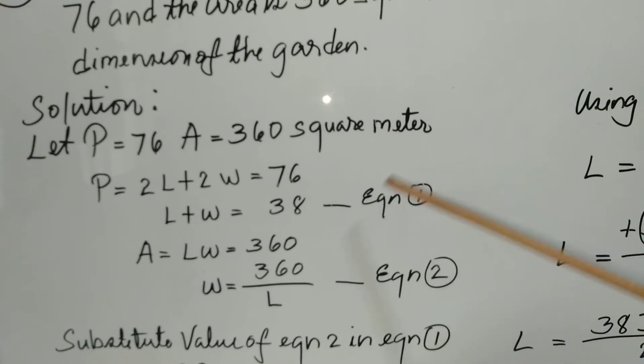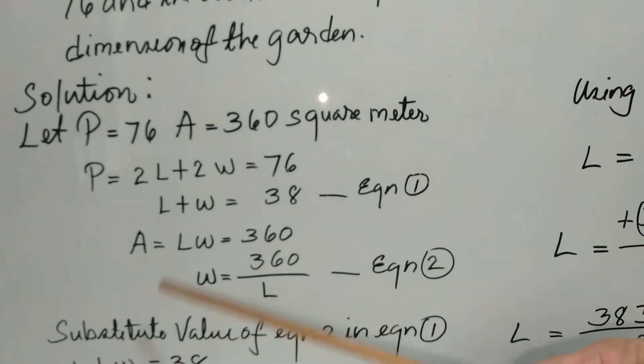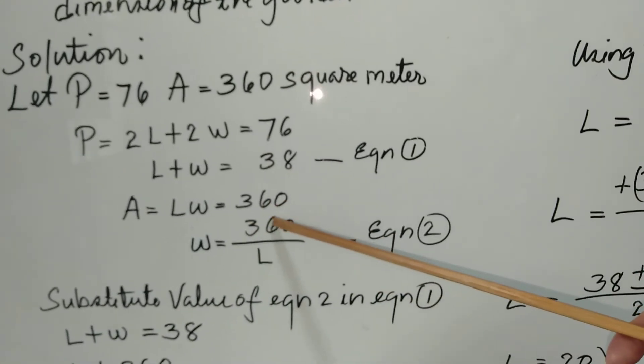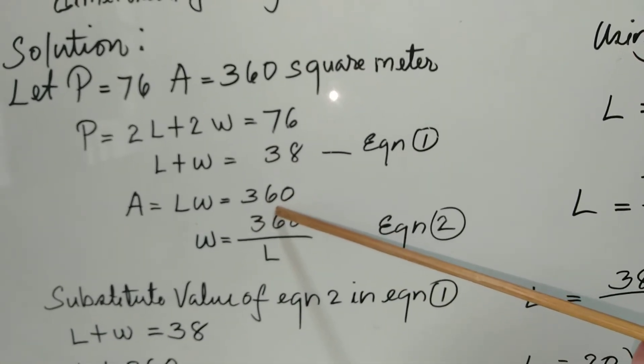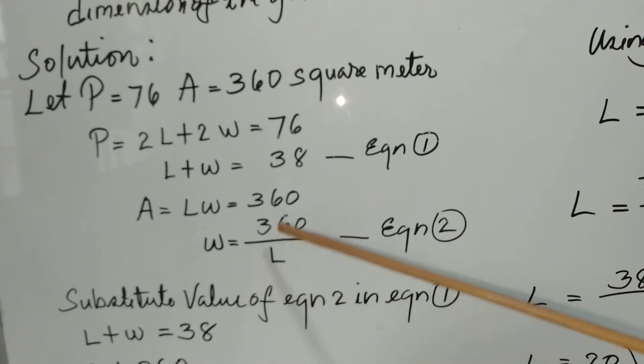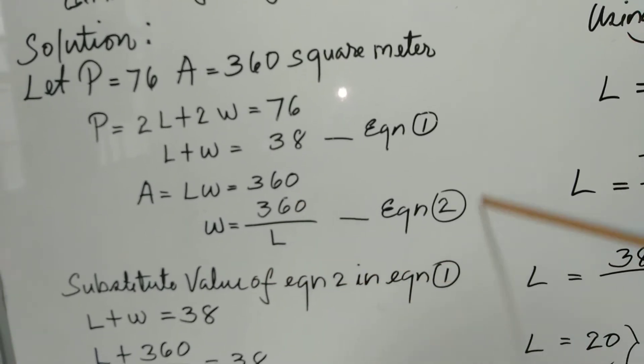We call this equation 1. We also know that the area is length times W equals 360. We divide both sides by L, so W equals 360 over L, and we call this equation 2.